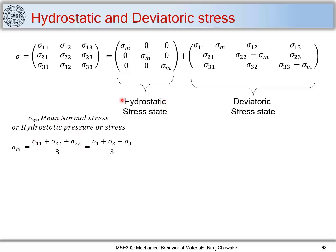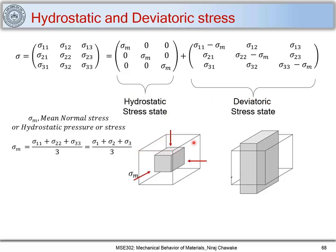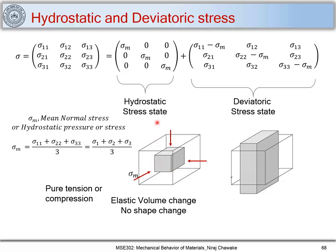Now let's see the implications of hydrostatic stress state and deviatoric stress. If I have a cube and apply a hydrostatic stress state — which can be pure tension or compression; here I have shown it in a compressive way — under this hydrostatic stress state, the volume of the big cube shrinks. So there is a change in volume, but you can see that the shape remains intact. There is a volume change but no shape change — that is what the hydrostatic stress state does.